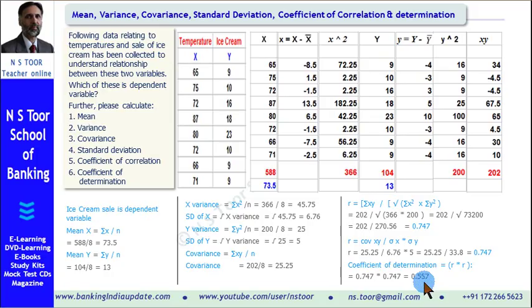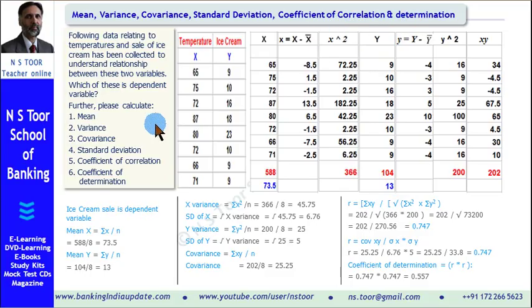Well friends, in this 11-minute video we have been able to calculate a number of measures: mean, variance, covariance, standard deviation, coefficient of correlation, and coefficient of determination. These are the basic tools which are used in statistics, and understanding them is very important for students who want to proceed with statistics. I am sure the contents of this video will be very useful for you. If you find the contents useful, please do not forget to subscribe. Thank you and all the very best.